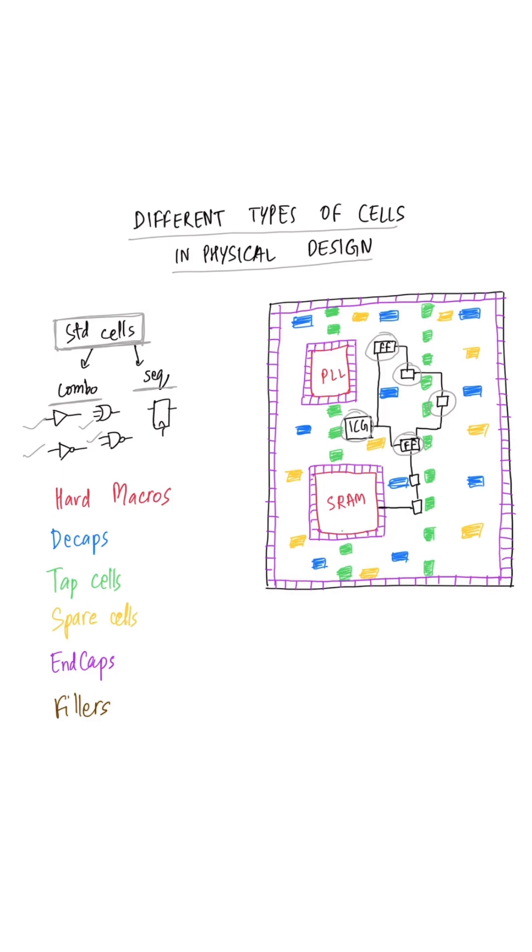The next category is the hard macros. So they are pre-designed cells or layouts like PLLs or SRAMs, which we use in our design and place them in the partition as they are.